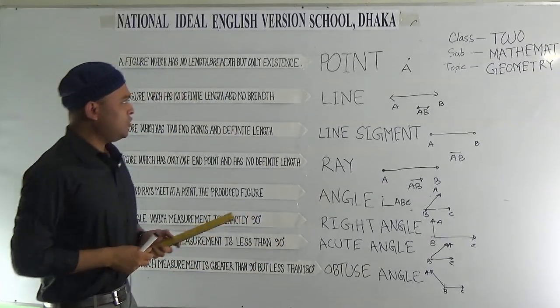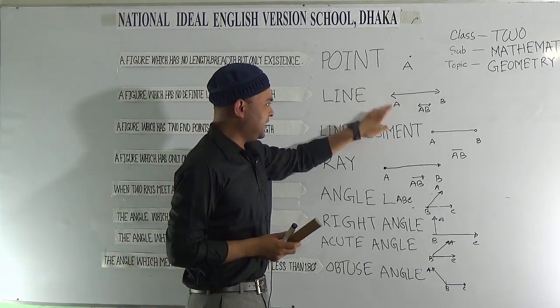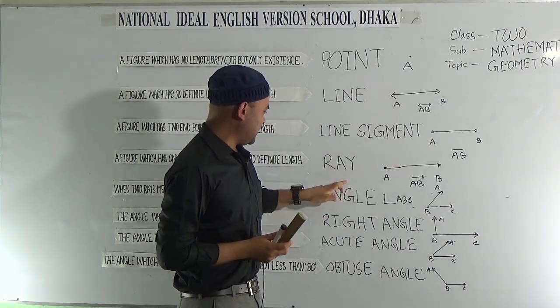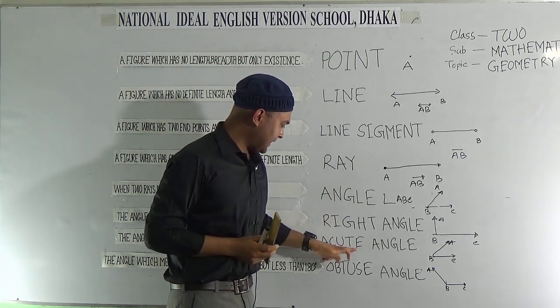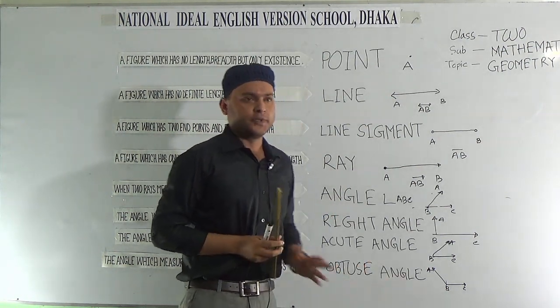We have already learned ABC is an obtuse angle, point, line, line segment, ray, angle, right angle, acute angle, and obtuse angle.